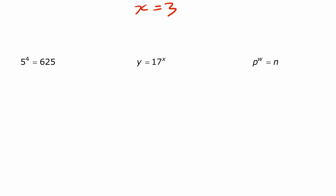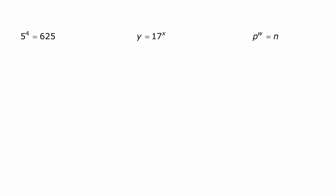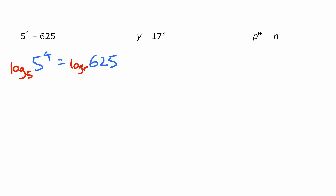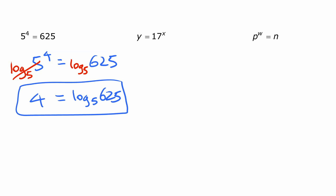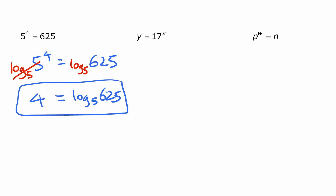Now here are three examples in different bases — the previous ones were all base ten. This one says five to the power of four equals six hundred and twenty-five. To change this into logarithmic form, we note that the exponential expression has base five, so we take the log base five of both sides. That cancels out because the log base five of five to the power of something is just that something, giving us: four equals log base five of six twenty-five.